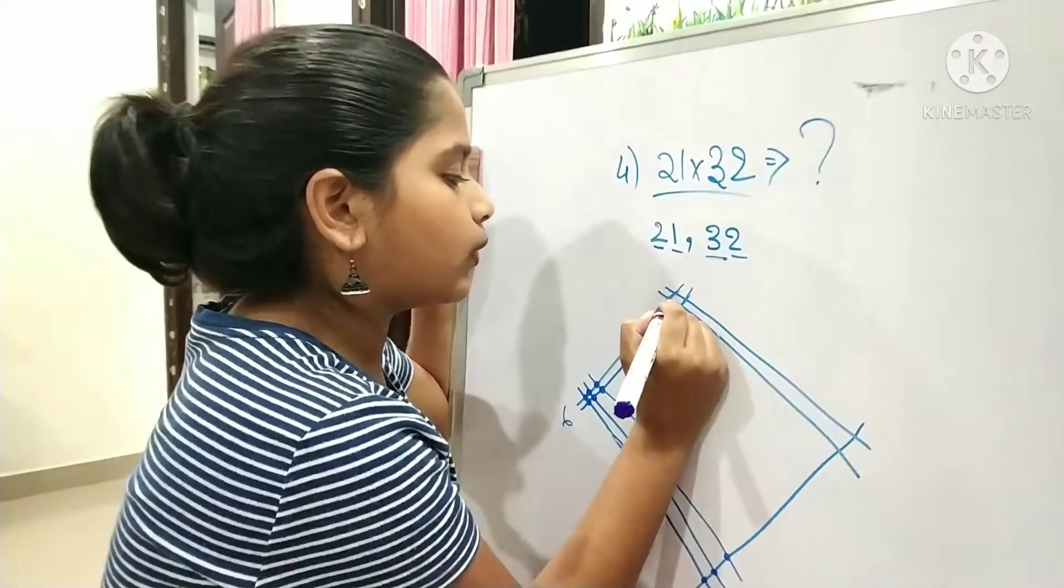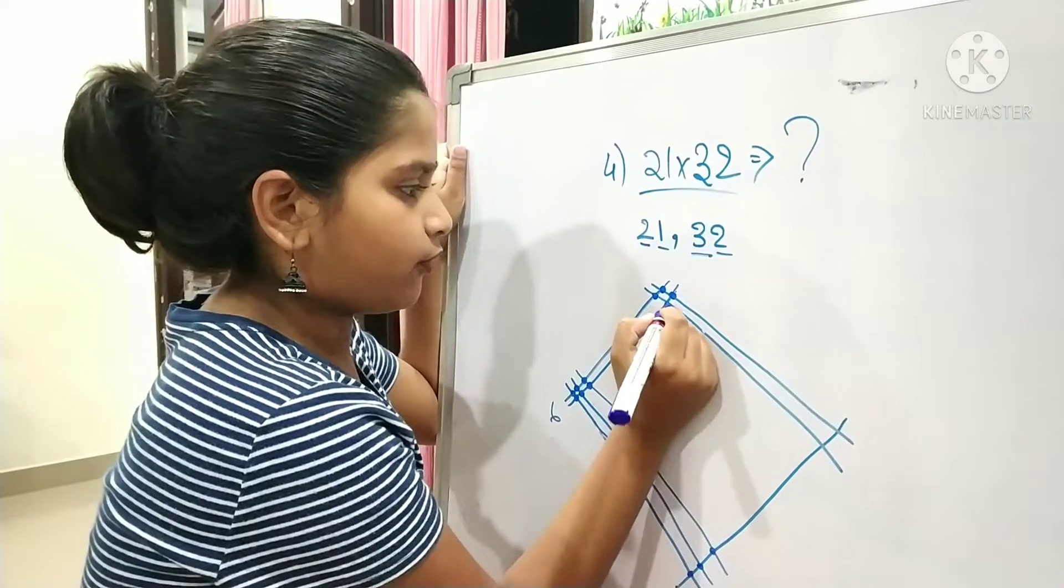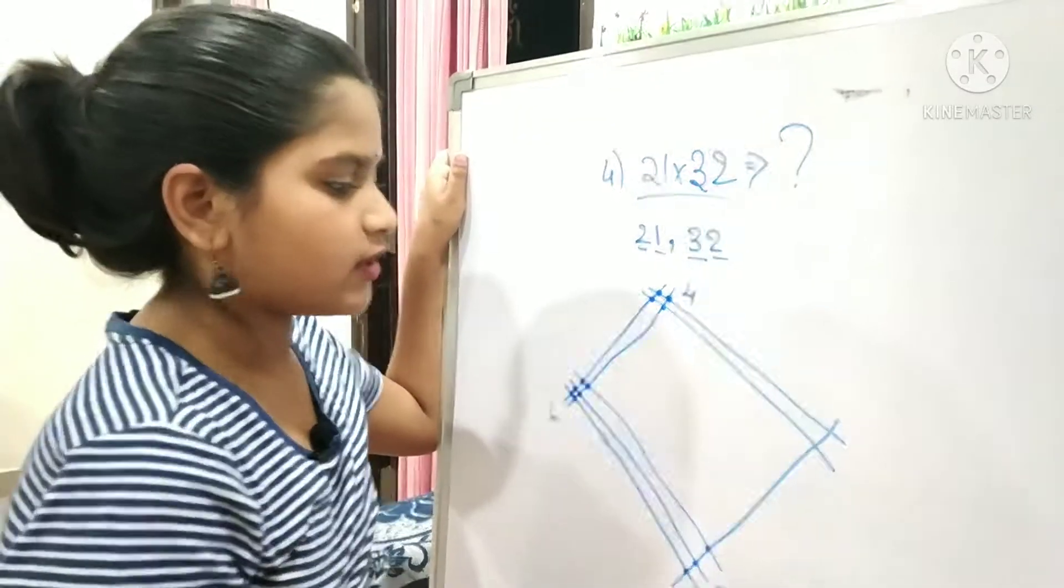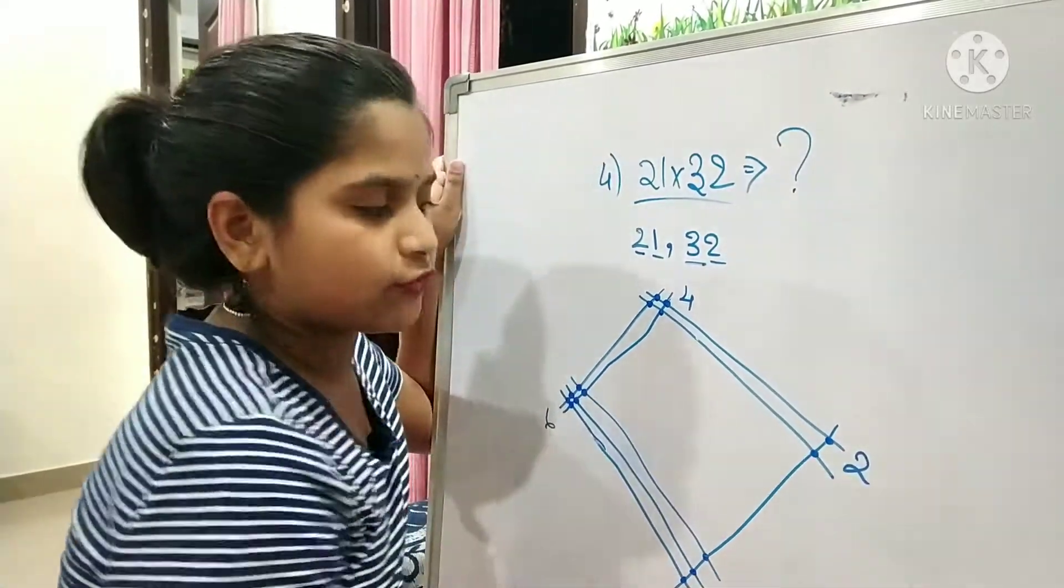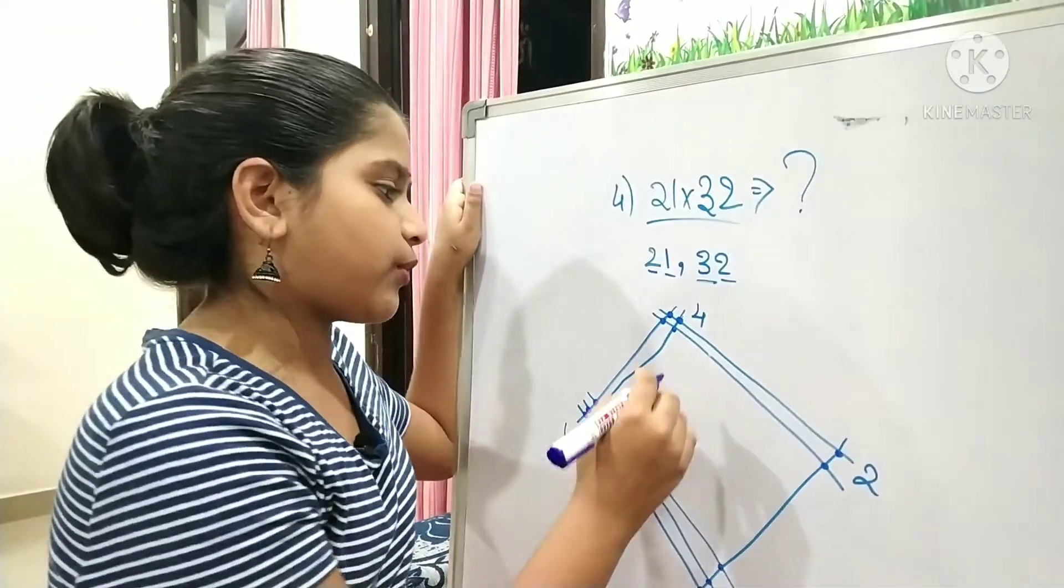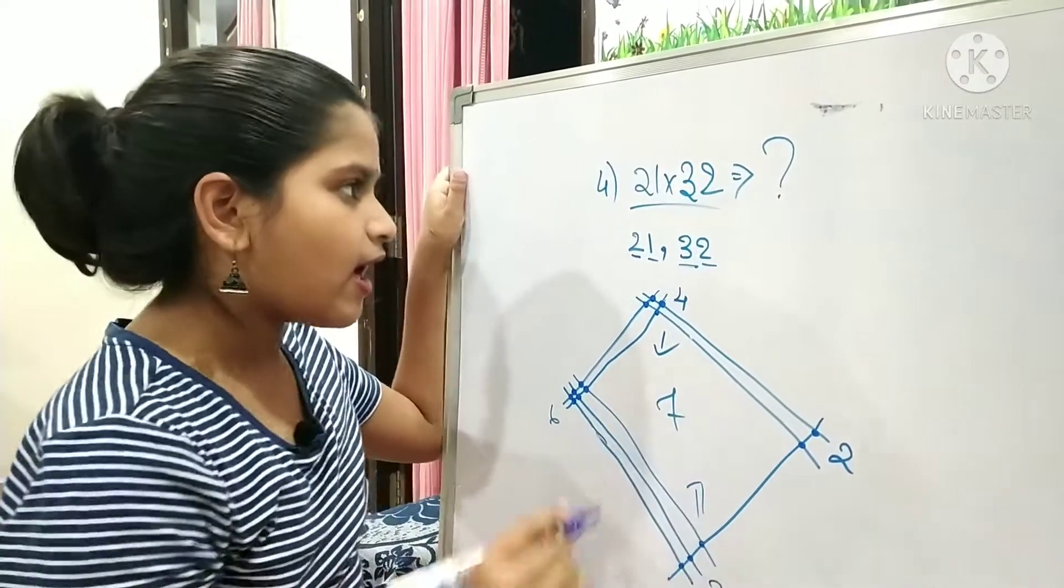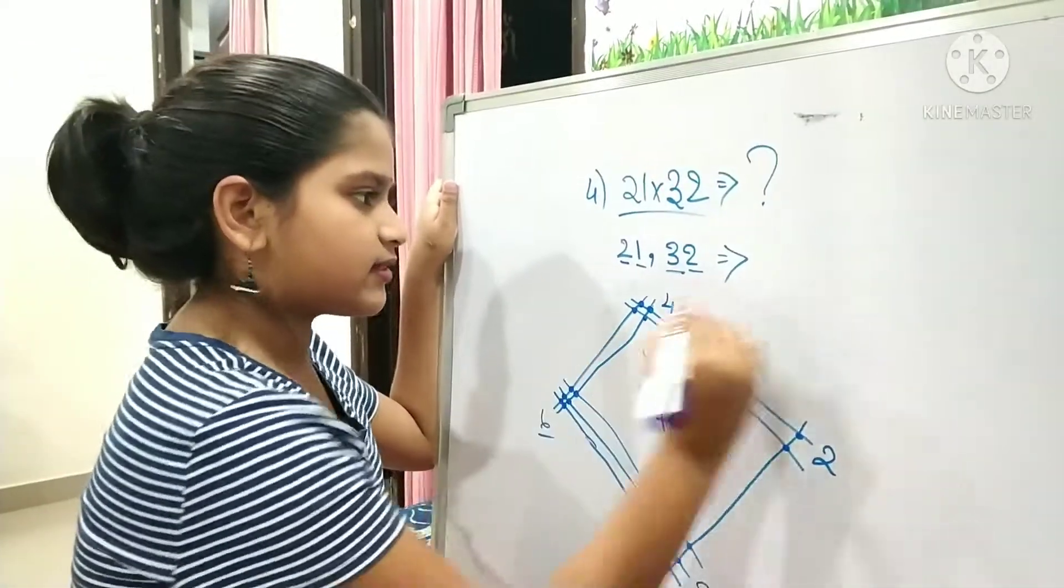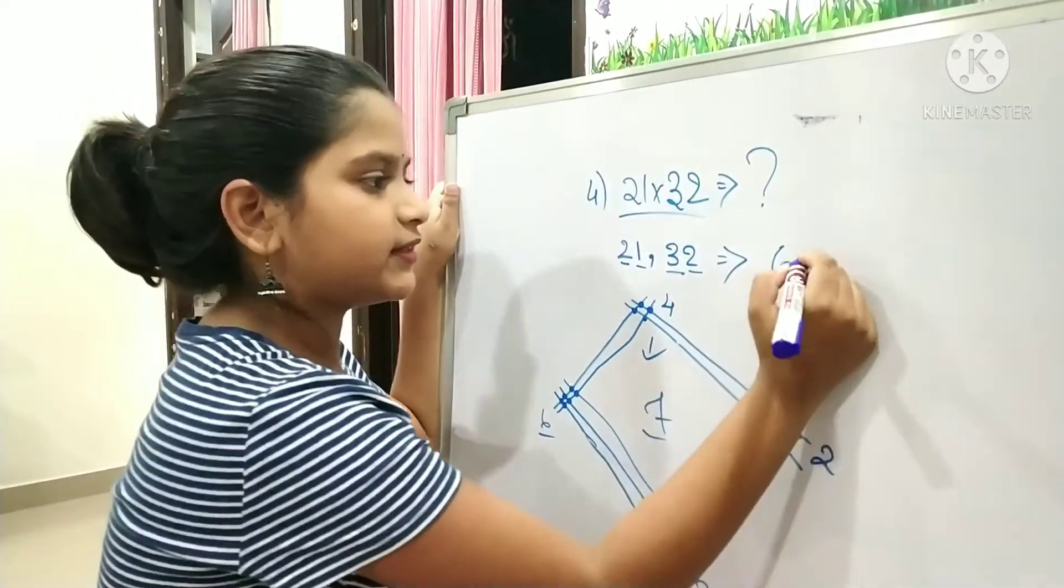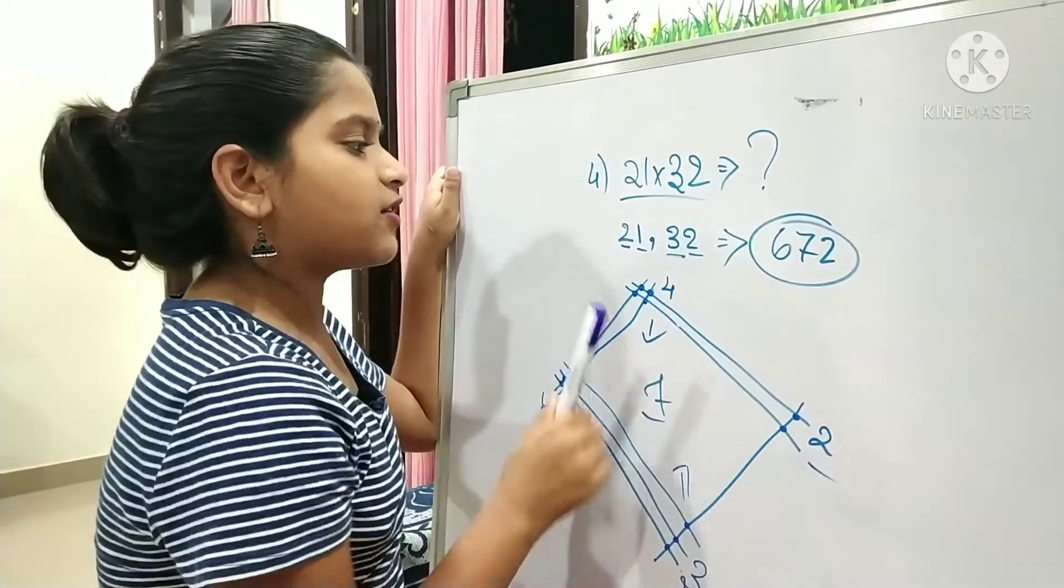Here, one, two, three, and four - there are four points formed. Last but not least, here there are two points formed. What you have to do is add 4 and 3, which gives us 7. For the answer, you will get 6, 7, and 2. So the answer for 21 times 32 is 672.